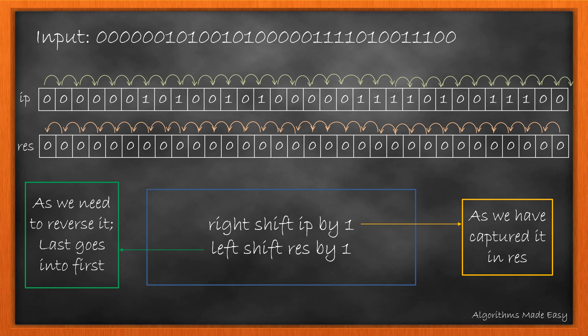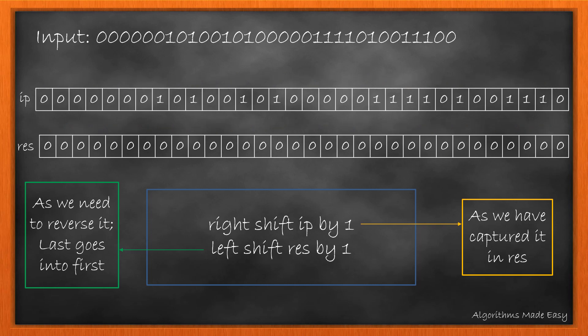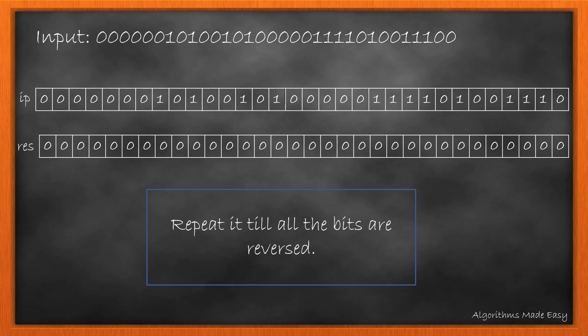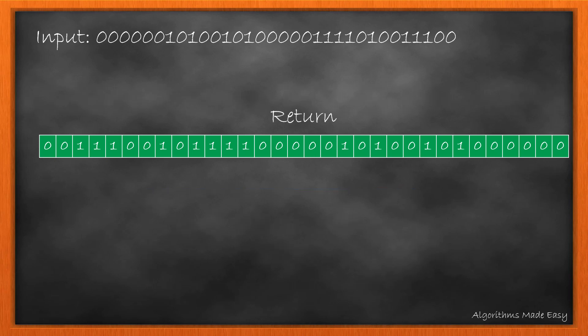We also shift the response left by 1 bit so that at the end we will get the reverse string. The input and response for our next iteration looks like this. We will repeat this till all the bits are reversed. At the end, the result will look like this and we will return the result.